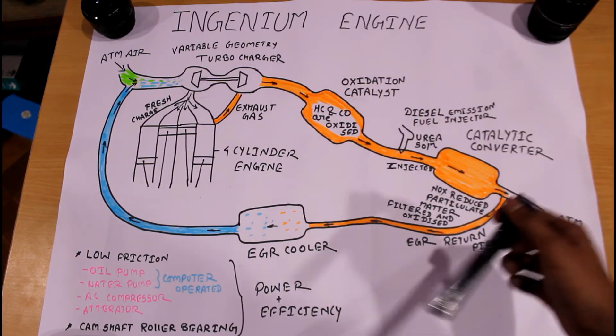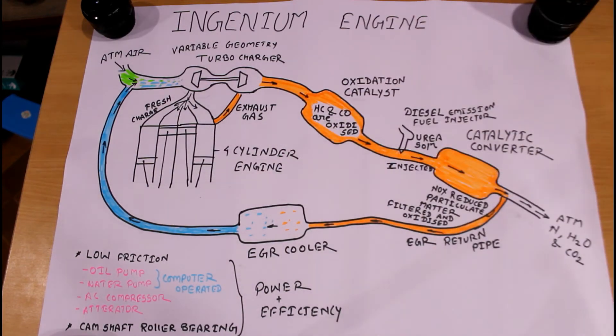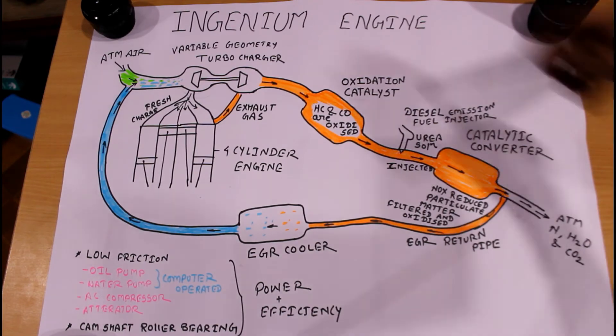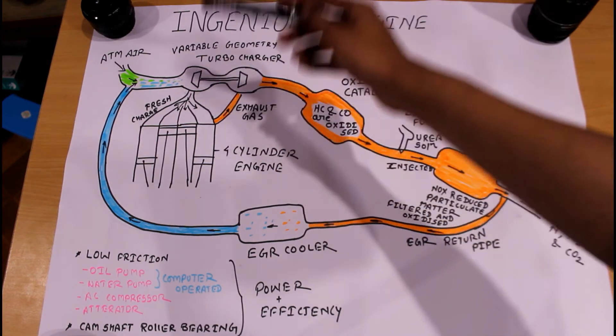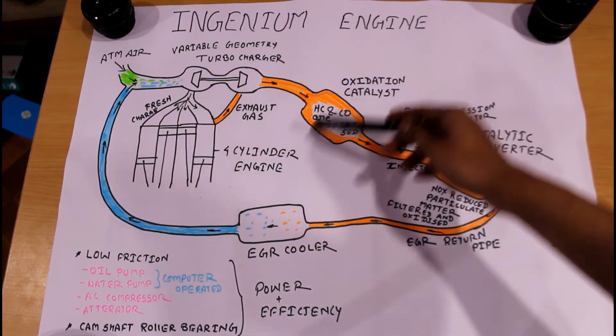In the fourth stroke of the engine, exhaust gases are extracted from the engine cylinder and go to the variable geometry turbocharger, rotating its turbine.